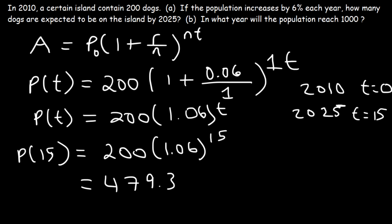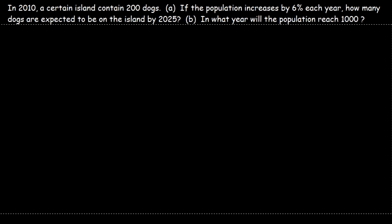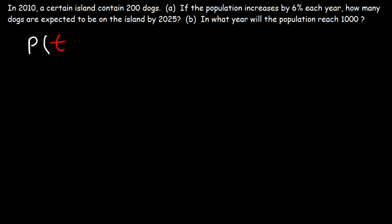Now in what year will the population reach 1,000? So let's start with this equation. P of T is equal to 200 times 1.06, raised to the T. So P of T, let's replace it with 1,000. And our goal is to solve for T.